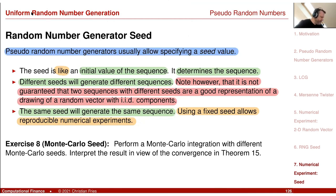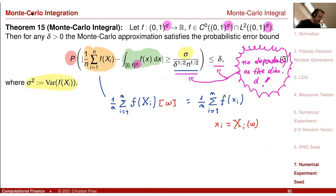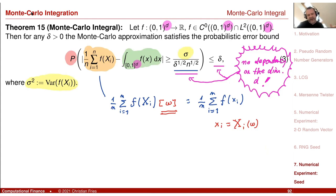Exercise: perform different Monte Carlo integrations with different Monte Carlo seeds. Interpret the result in view of our convergence in Theorem 15. Using different seeds is a little bit like using different omegas. You see that our result holds only in probability, because sometimes we have a seed where we lie outside the given range.